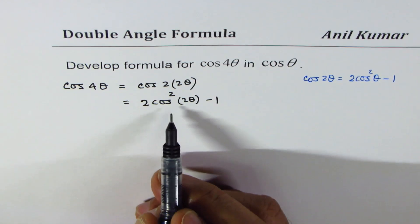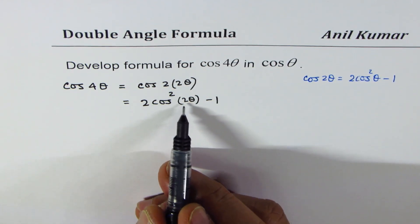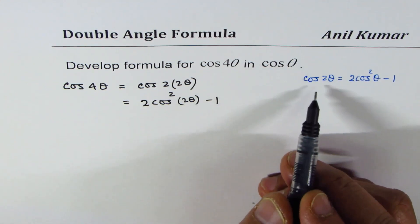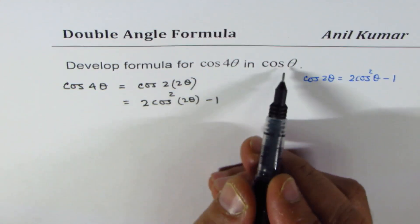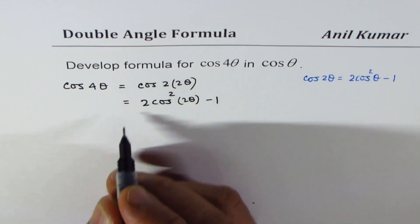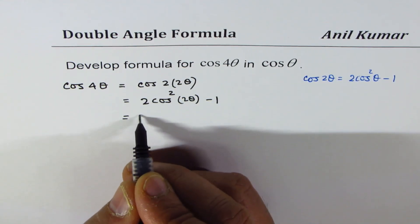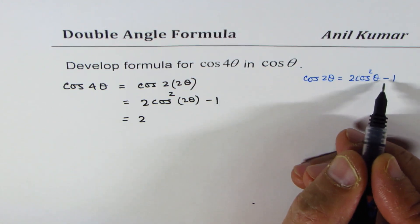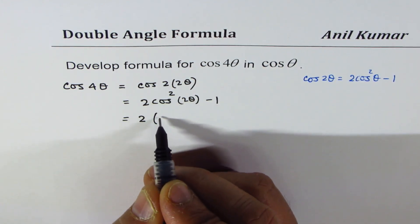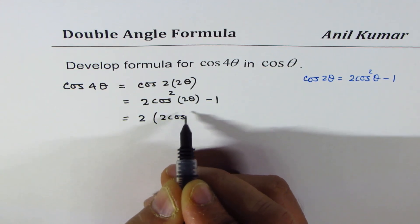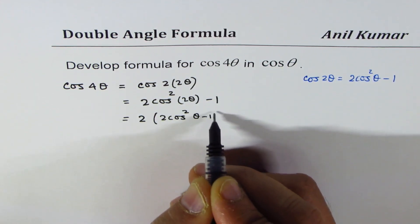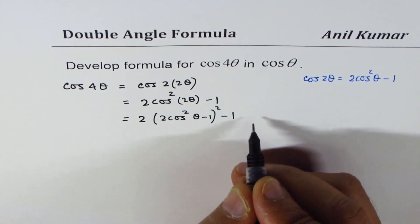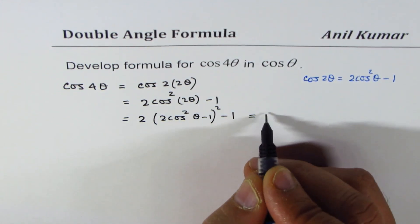Now we have cos²(2θ). We can again use this particular formula and then rewrite to get the formula in θ. So we could write this as 2 times, cos 2θ is 2 cos²θ minus 1, so I will write this as (2 cos²θ minus 1)² minus 1. Now we can actually expand this.